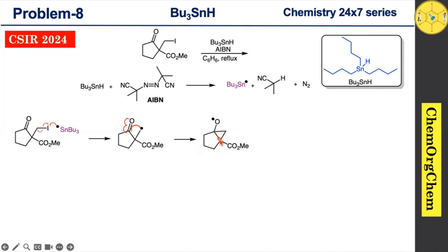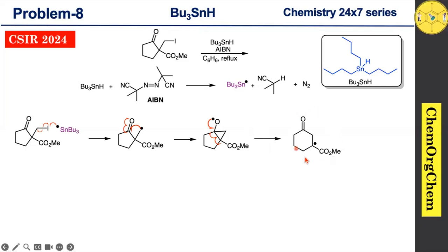We know that a three-membered ring is one of the most strained ring systems. As a result, cleavage of the three-membered ring takes place. Here you can see how this happens — the radical induces homolytic cleavage of the carbon–carbon bond, causing ring expansion.